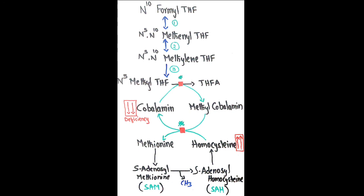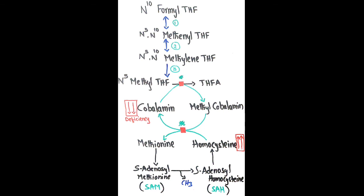Normally, the methionine formed is converted into SAM (S-adenosyl methionine), which is then converted into S-adenosyl homocysteine. During this conversion, a methyl group is released, which is used in the process called transmethylation. From S-adenosyl homocysteine, an adenosyl group is released, leading to formation of homocysteine, which is again converted back into methionine with the help of methylcobalamin. These reactions — both the star and hash marked steps — depend on cobalamin, and this concludes the discussion on folate trap.